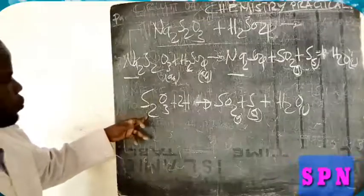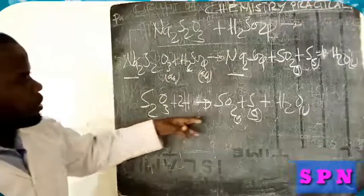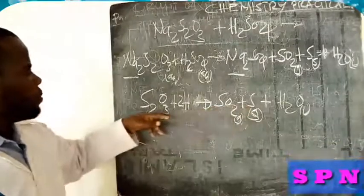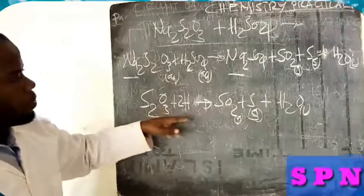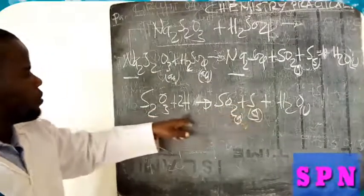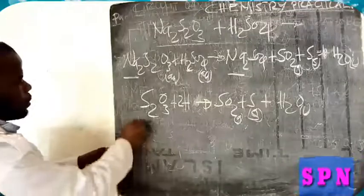So when you balance, two sulfur, one, two, oxygen, two, three, oxygen, one, three, hydrogen, two. So this is the ionic equation.